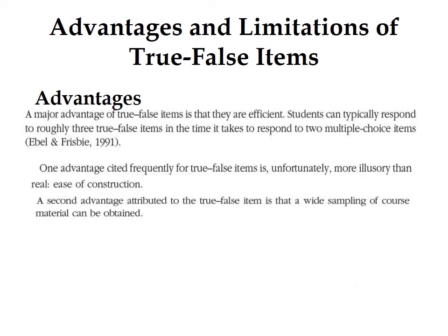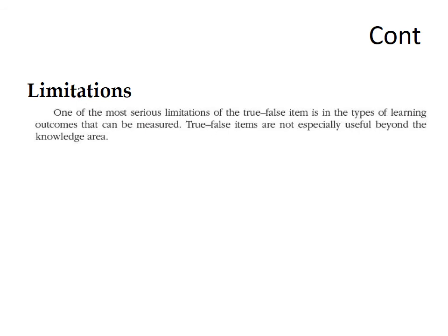Advantages and limitations of true-false items: A major advantage is efficiency — students can typically respond to three true-false items in the time it takes to respond to two multiple-choice items. Another advantage is ease of construction, and wide coverage of course content. A serious limitation is the type of learning outcome that can be measured, as true-false items are not especially useful beyond the knowledge level. Another limitation is the high chance of guessing.